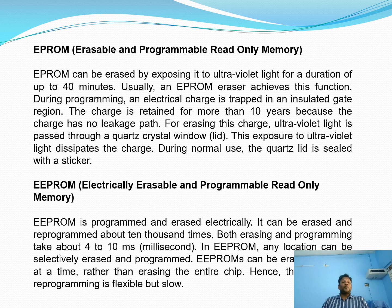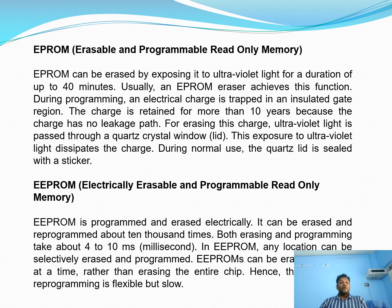Next is EPROM — Erasable and Programmable Read Only Memory. It can be erased by exposing it to ultraviolet light for a duration of up to 40 minutes. During programming, an electric charge is trapped in an insulated gate region. The charge is retained for more than 10 years because the charge has no leakage path. For erasing this charge, ultraviolet light is passed through a quartz crystal window. During normal use, the quartz lid is sealed with a sticker.